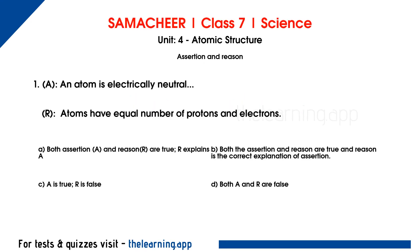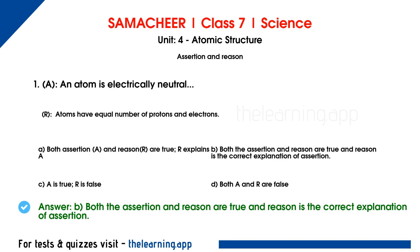Now we will see assertion and reason. First question — Assertion: an atom is electrically neutral. Reason: atoms have equal number of protons and electrons. Assertion is true and reason is true. Protons and electrons are present in equal numbers, so positive and negative charges balance, making the atom neutral. The correct answer is option B: both assertion and reason are true, and reason is the correct explanation of assertion.